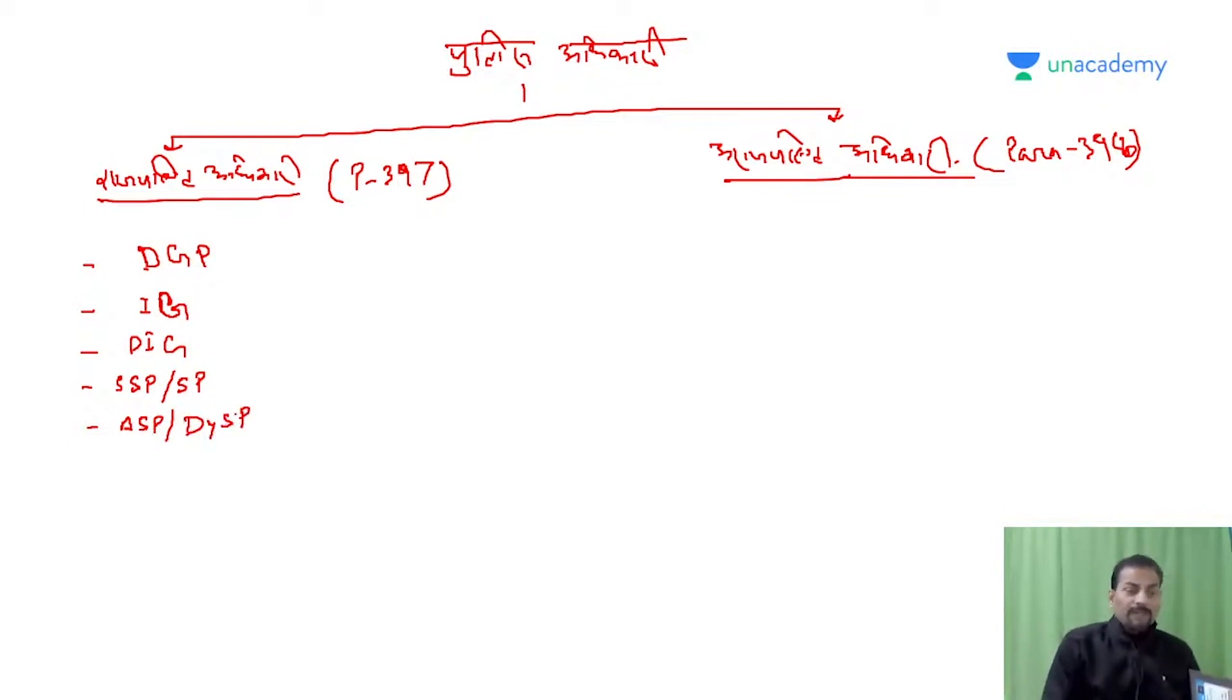These are gazetted police officers: Director General of Police, Inspector General of Police, Deputy Inspector General of Police, Senior Superintendent of Police or Superintendent of Police, Assistant Superintendent of Police or District Deputy Superintendent of Police. These all are gazetted police officers.